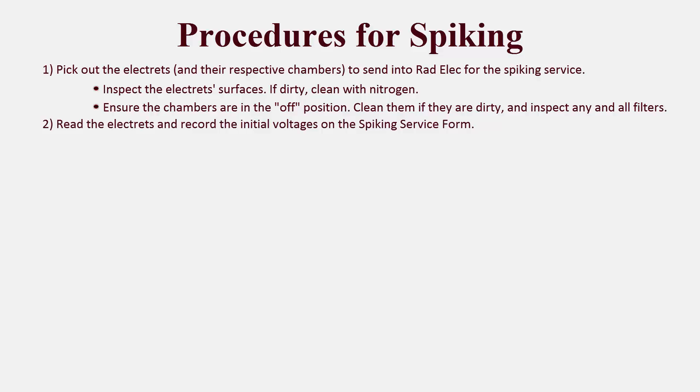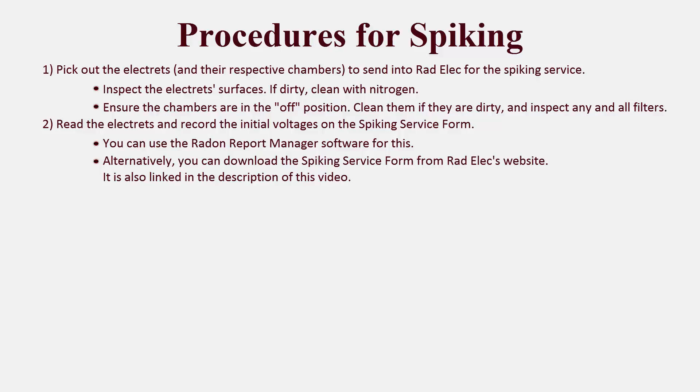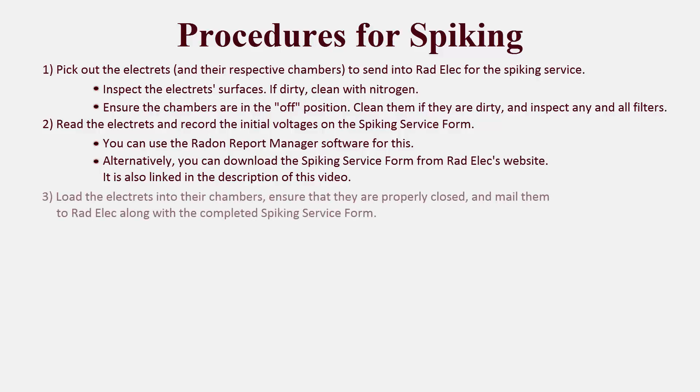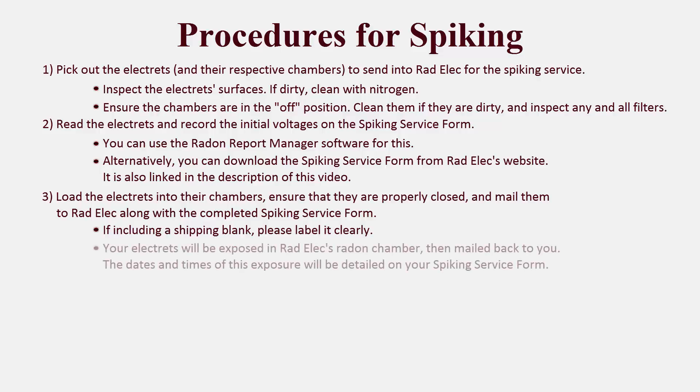The second step is to read the electrets and record the initial voltages on the spiking service form. You can use the Radon Report Manager for this step, or download the spiking service form directly from Radelec's website. Step three is to load the electrets into their chambers, ensure that they are properly closed, and then mail them back to Radelec along with the completed spiking service form. If you are including a shipping blank that is not going to be exposed in the radon chamber, please label it clearly. Once we receive your electrets, we will expose them in Radelec's radon chamber. We perform spiking twice per week, beginning on Monday and Wednesday afternoons, and each exposure lasts 48 hours. As soon as we remove your electrets, they will be mailed back to you.